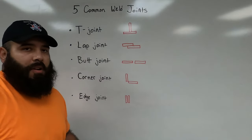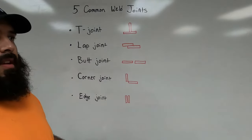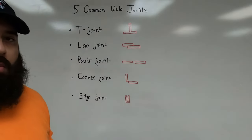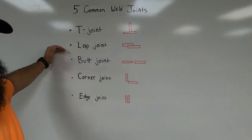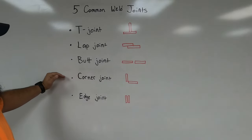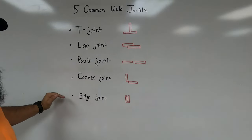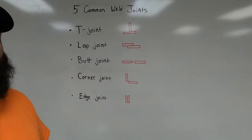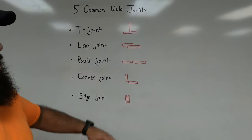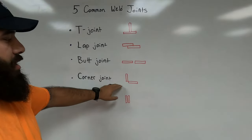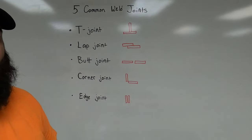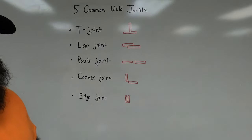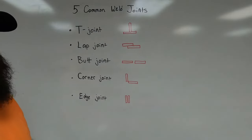There are five common welding joints: T-joint, lap joint, butt joint, corner joint, and edge joint. Everything you do out in industry is going to boil down to some variation of one of these five different welding joints. But the welding symbol is going to give us some extra information.